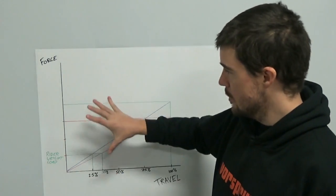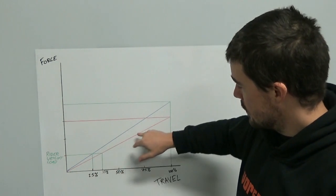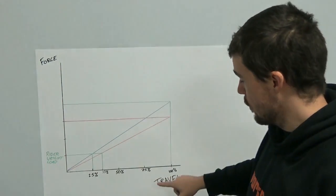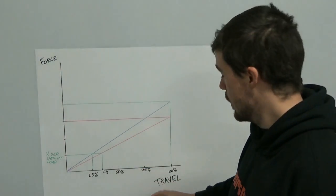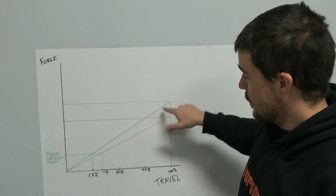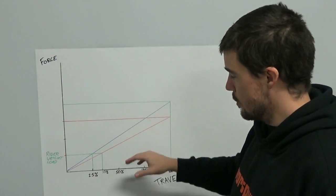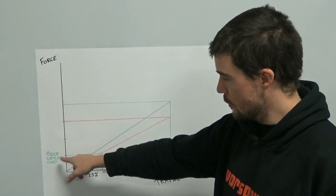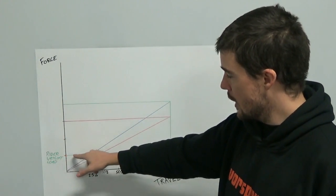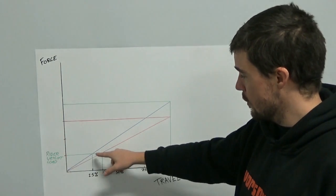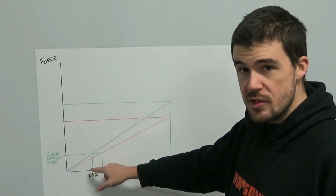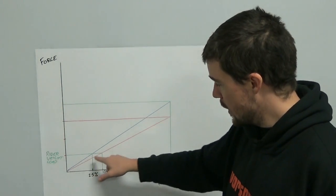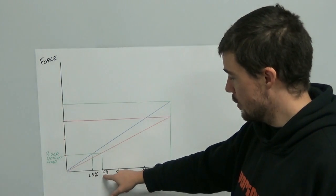To give you some indication of how that all works, let's have a look at two different spring rates — the blue line and the red line. On this force versus travel graph, the blue line is the steeper line, so we can see that is the stiffer spring rate. The red line is a bit flatter — a softer spring rate. If we draw in a line at a certain force — an arbitrary force — and say this is the rider weight load, at where that load crosses the blue line, that gives us the sag percentage with that spring. I've set that up to be 25%.